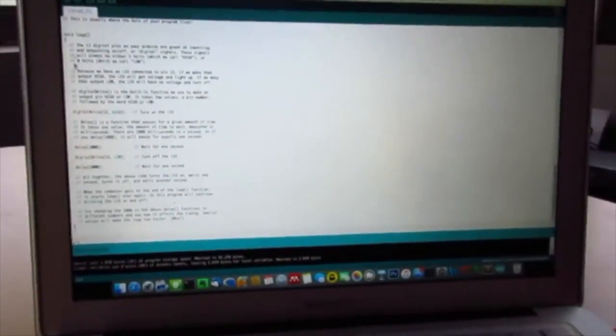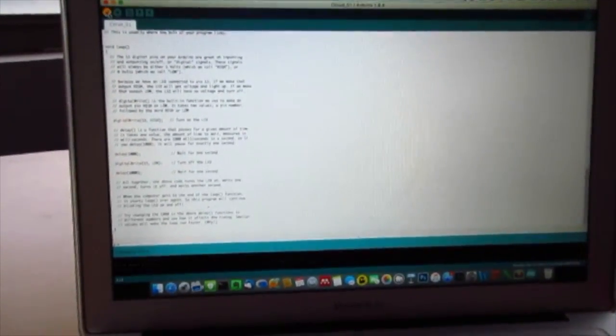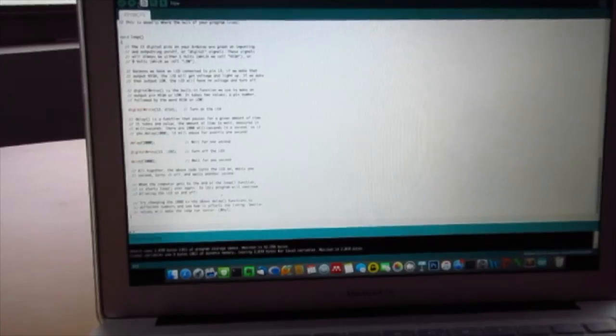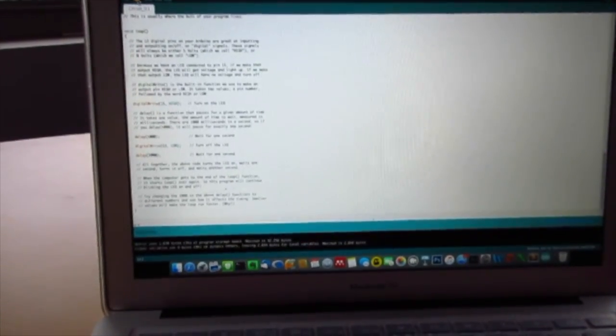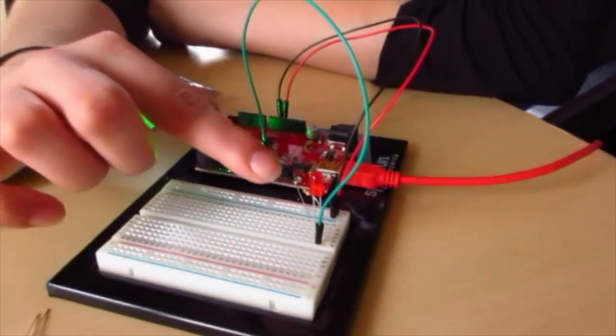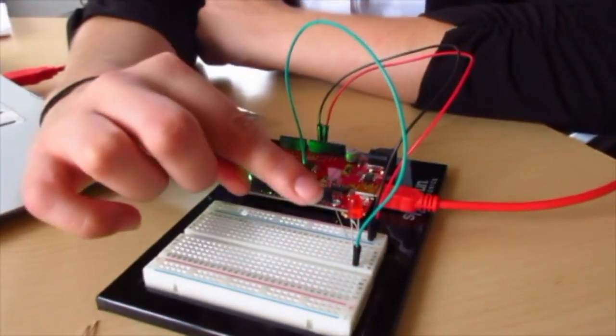Then you can plug back in and go to the software, verify, wait till it's done compiling, and upload to your board. Now you have a different colored blinking LED light.